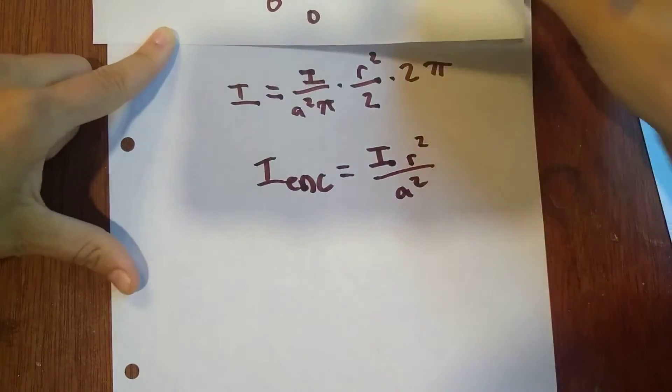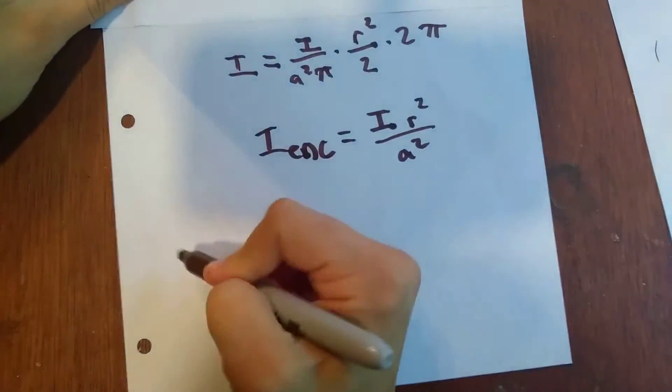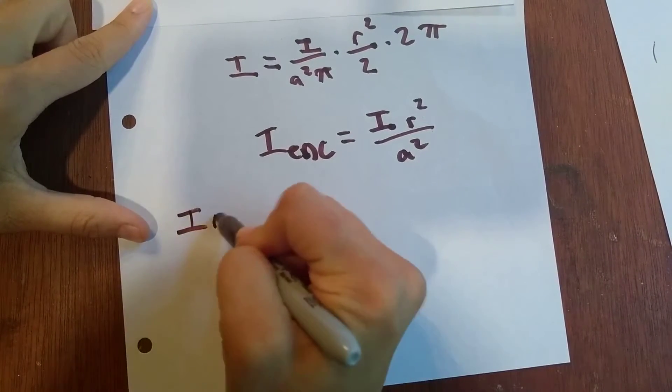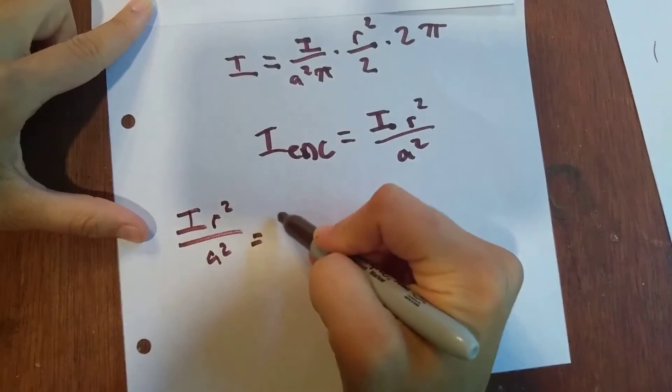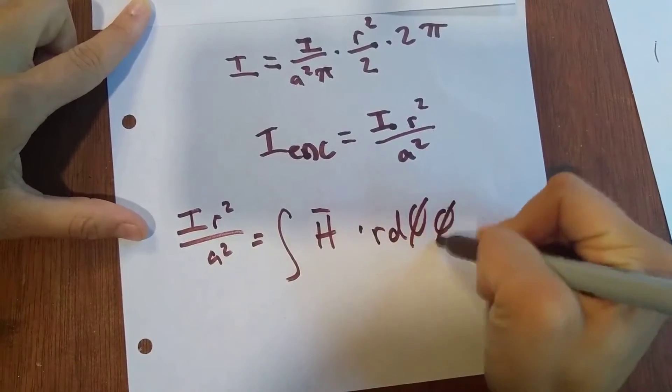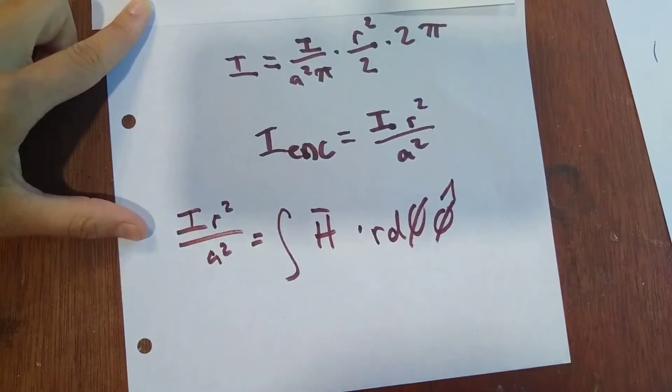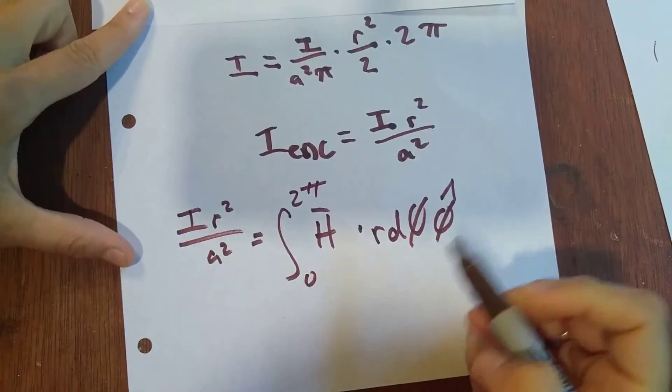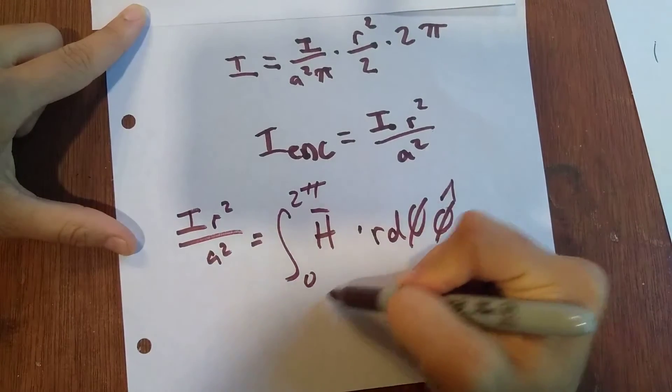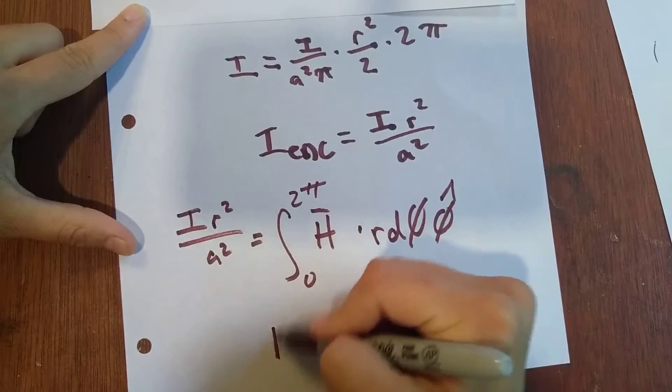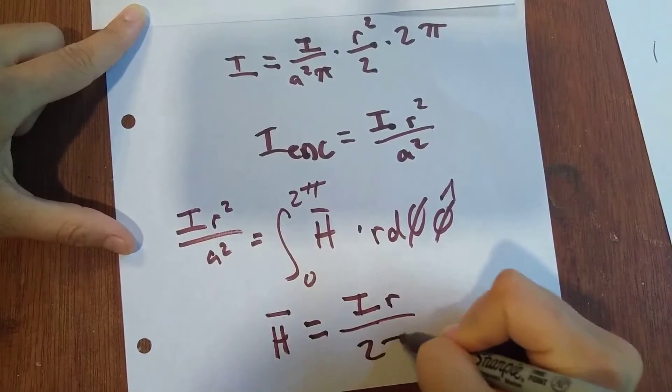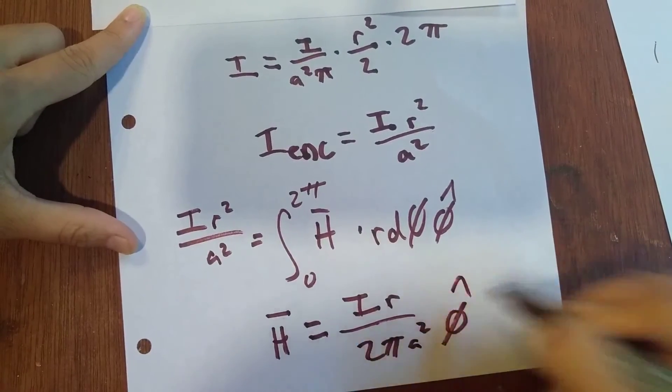So now we're going to plug that back into a new Ampere's Law equation. So I R squared over A squared equals the integral of H dot DL, which is R D phi phi hat, bounds 2 pi. So this is going to give us H equals I R over 2 pi A squared in the phi hat direction.